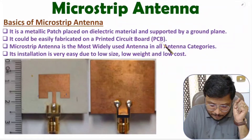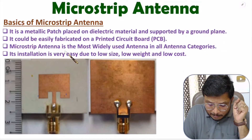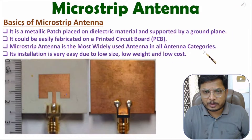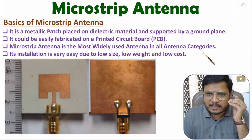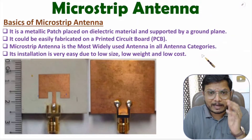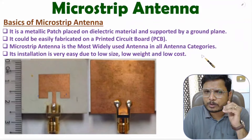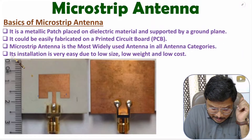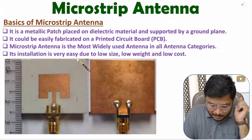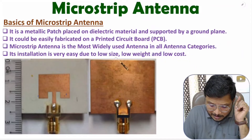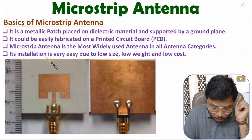Microstrip antenna is the most widely used antenna in all antenna categories. Almost 60 to 65 percent of antenna applications are served by microstrip antenna. Its installation is very easy because it has lower size, lower weight, and low cost. Because of these three parameters it is most widely used.